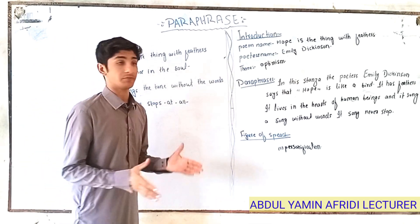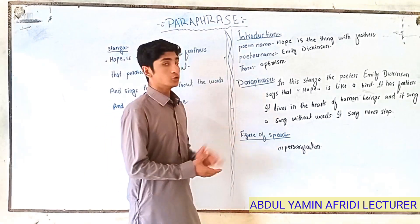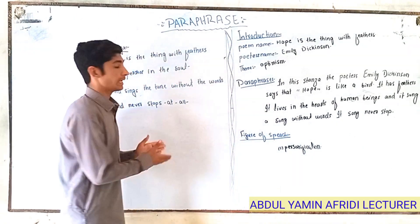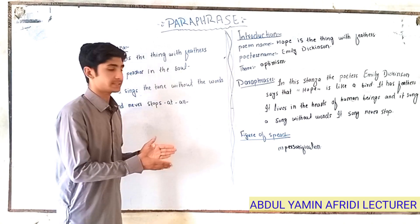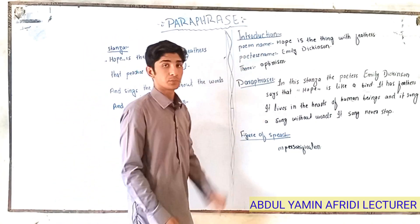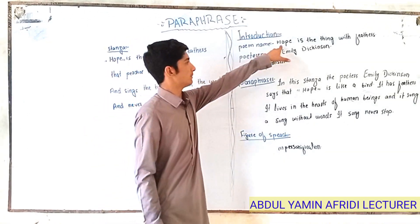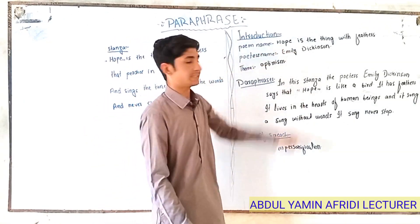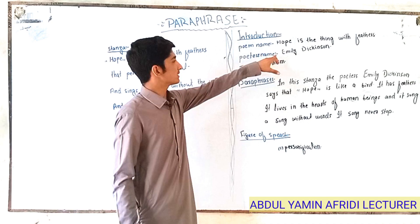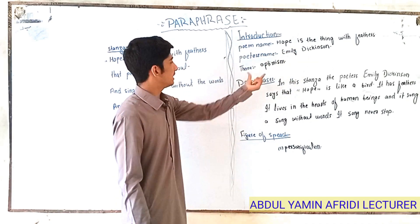Now how we can write the paraphrase of this stanza? First of all, we should write the introduction of the stanza — which poem it is present in, the poet's name, and the theme of the stanza. The poem name is 'Hope is the Thing with Feathers.' The poet's name: this poem is written by her, name is Emily Dickinson. The theme is optimism.